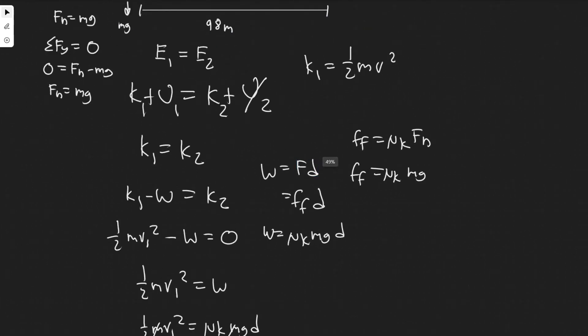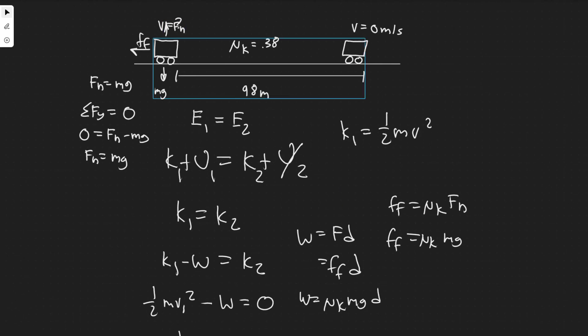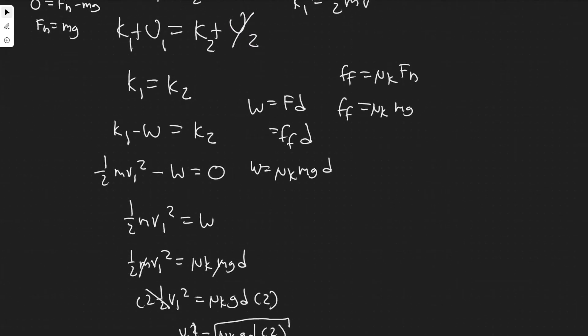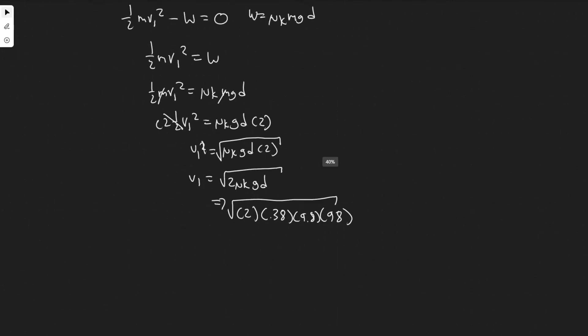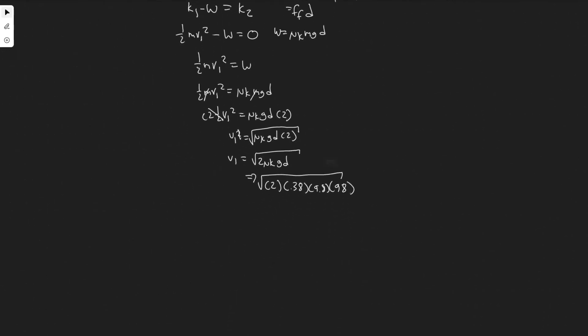Now it's just a matter of plugging it in. We have √(2 × 0.38 × 9.8 × 98). You would get 27.0167, so I'm rounding to 27 meters per second. This is your velocity. They say determine the speed when the driver slammed on the brake, so they're traveling 27 meters per second at this point in time.